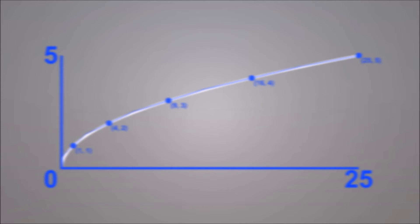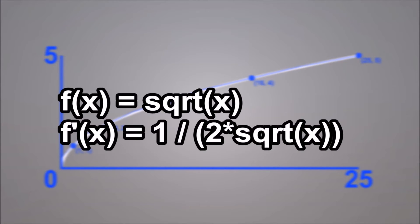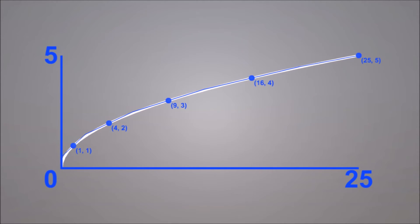To find that slope, we use the derivative of the function. A derivative, simply put, is a function made from the function we are graphing that tells us the slope at almost any point on the graph. In this case, the derivative of √x is 1 / (2√x). To estimate the square root of a number, we first find — much like the guess-and-check method — what square integer the number is closest to. For this example, 17 would be closest to 16. Let's take a closer look at that section of the graph.